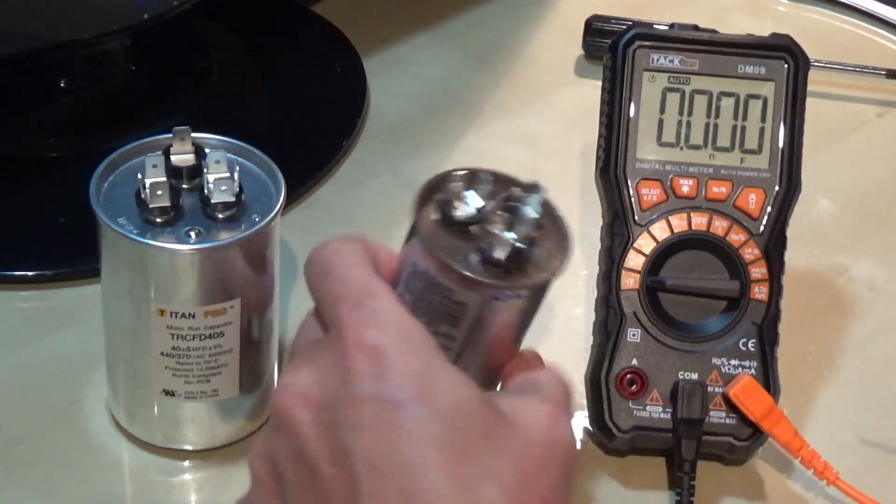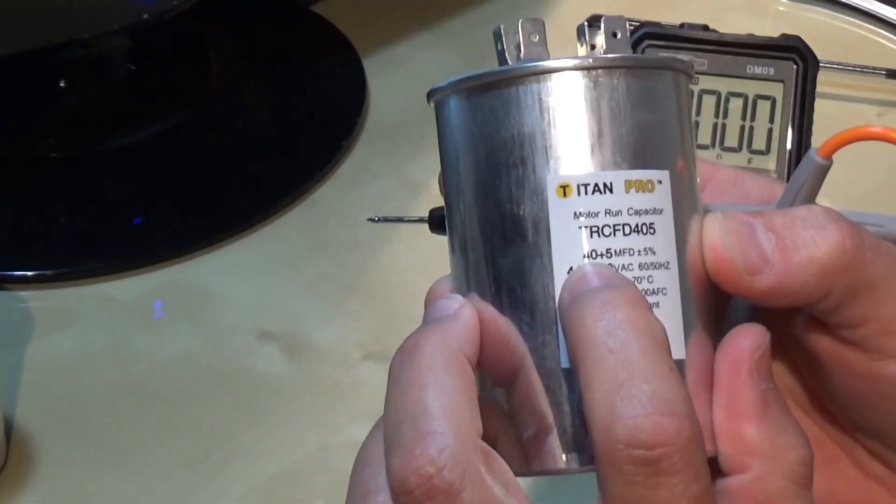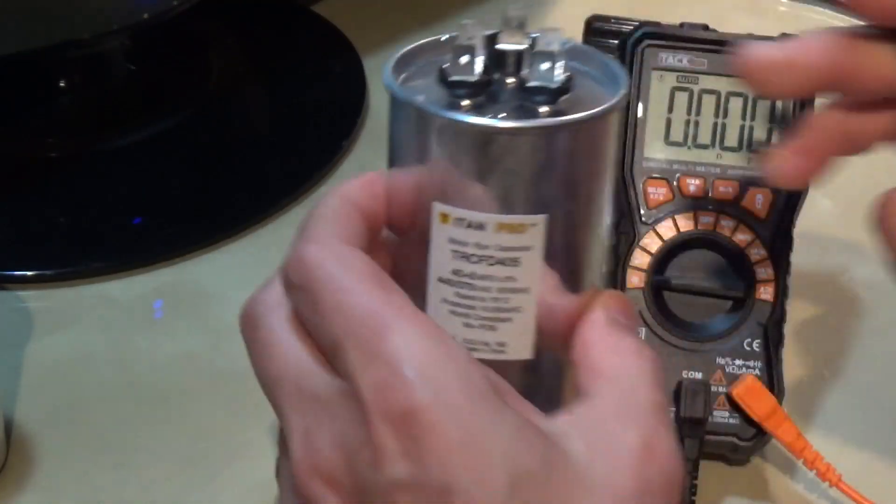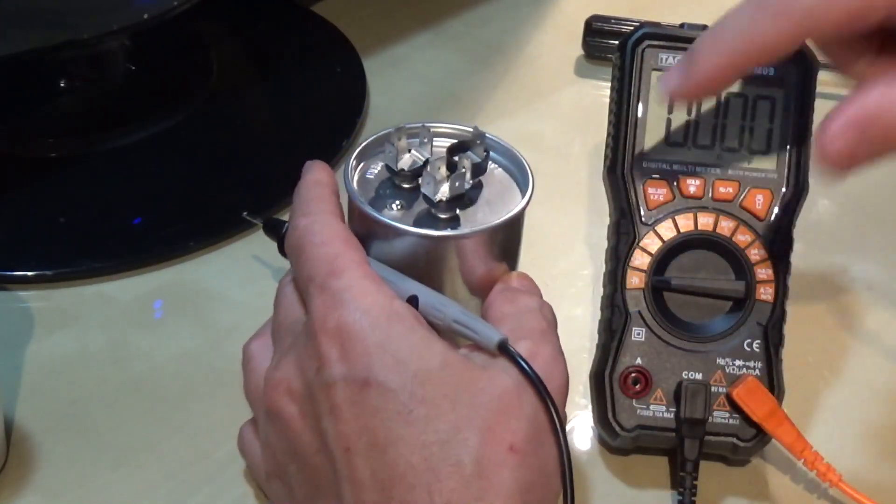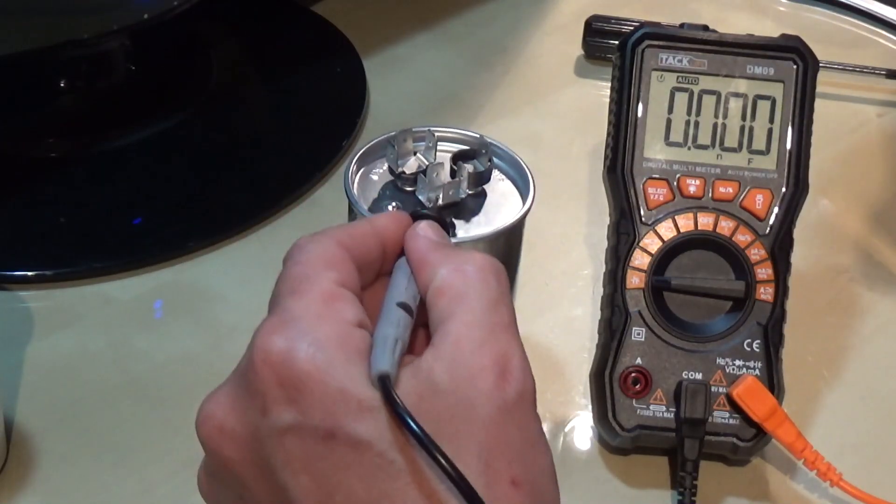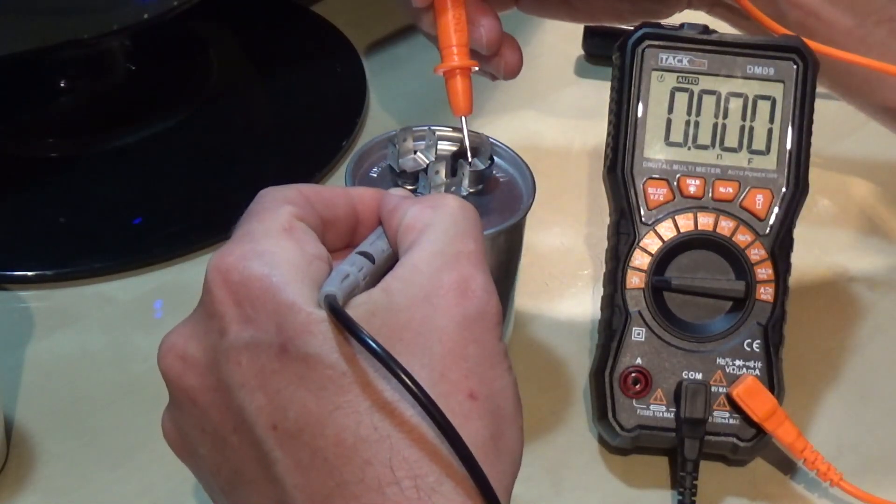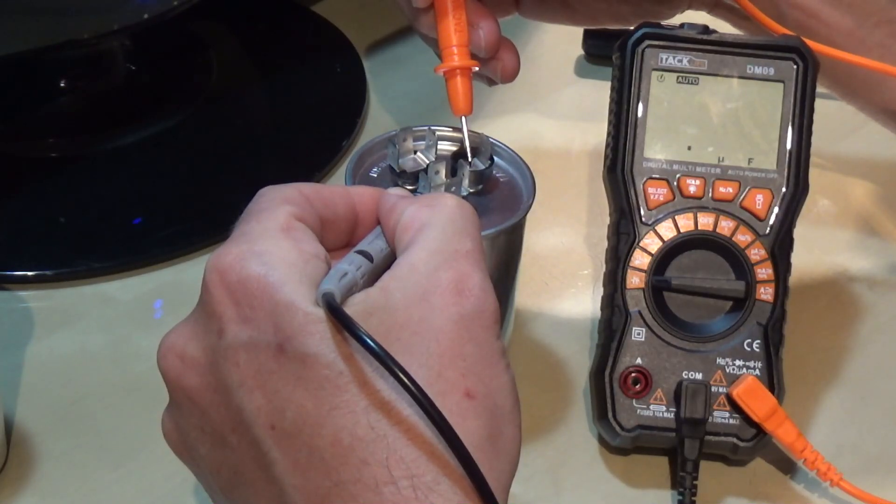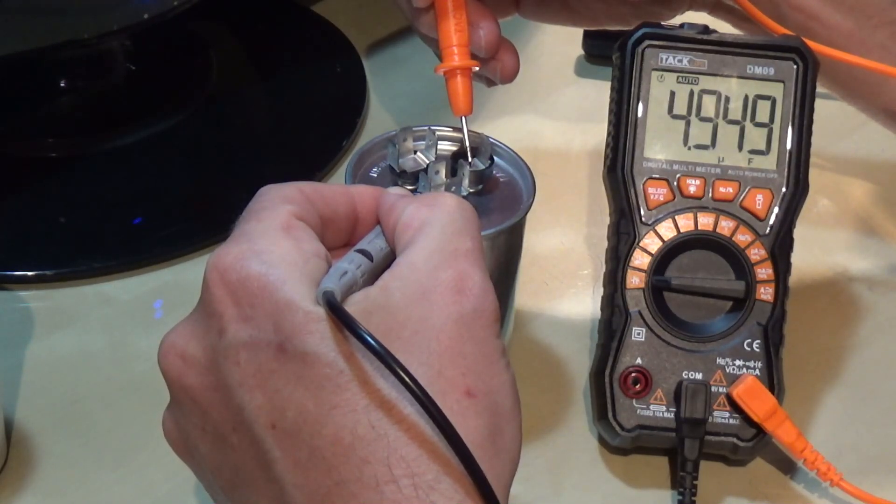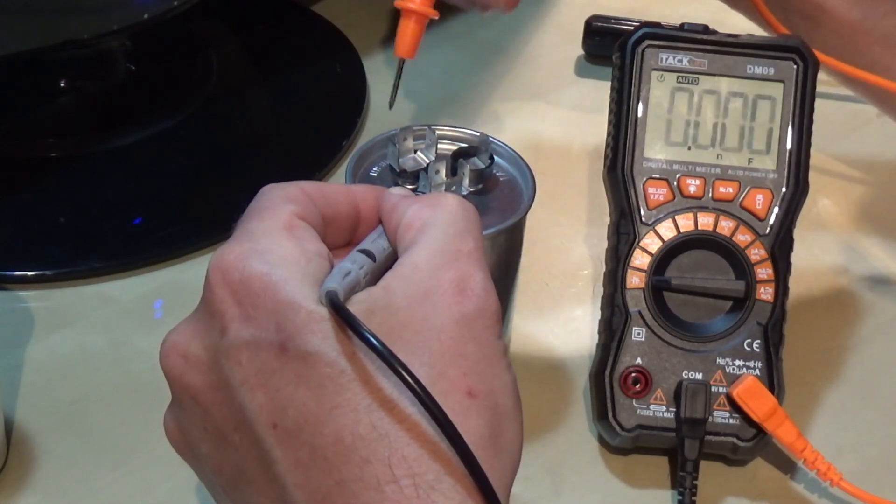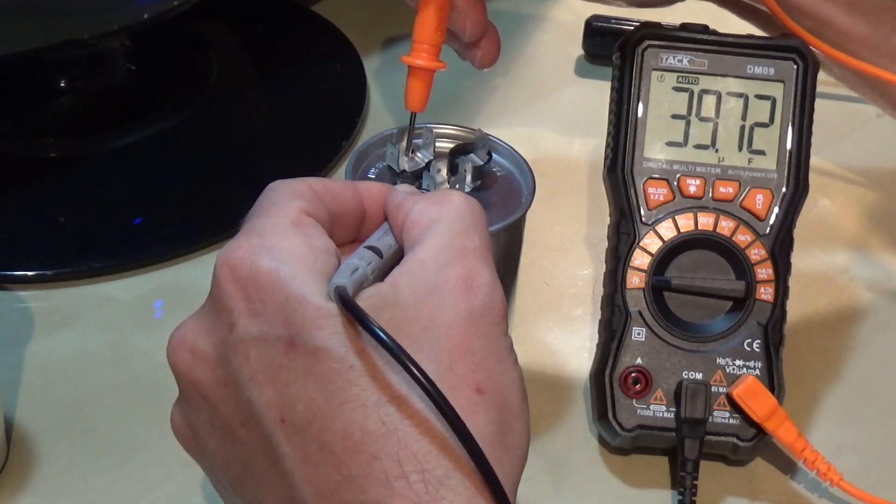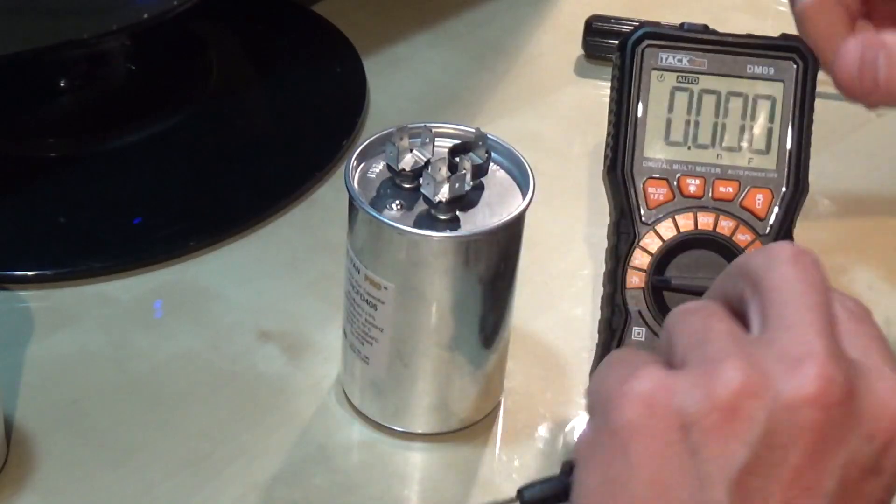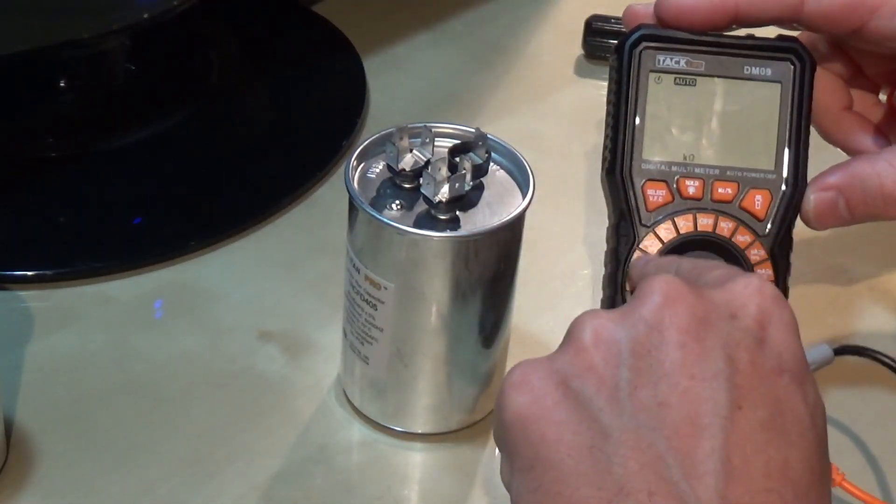This one is supposed to have 40 and 5. I'm going to check it the same way. Look for common—common is letter C—and fan. This one is 4.9, that means it's good. And the other side is 39, which is very close to 40.